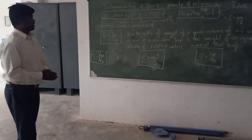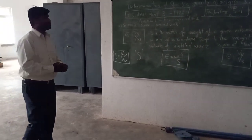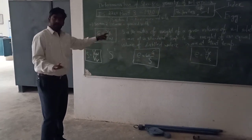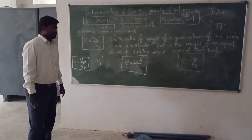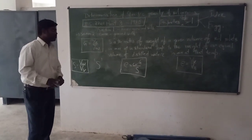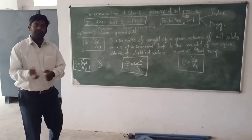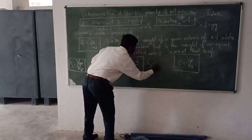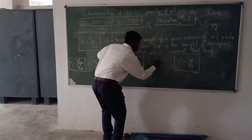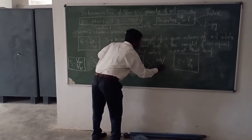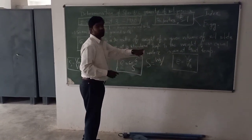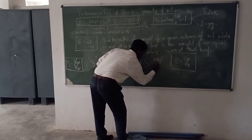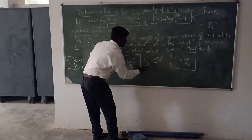Now, what is specific gravity? Specific gravity is the ratio of weight of a given volume of soil solids in air at a standard temperature to the weight of an equal volume of still water in air at that particular temperature. So specific gravity equals Ws divided by Ww.